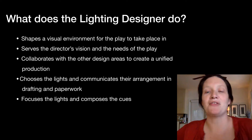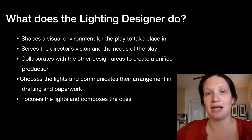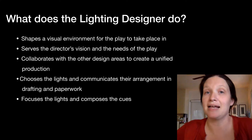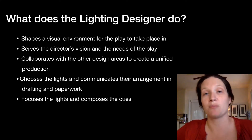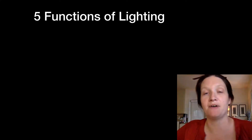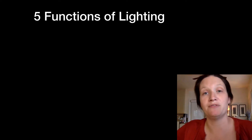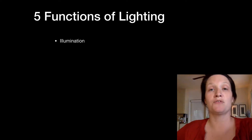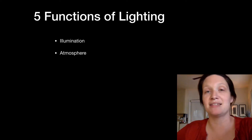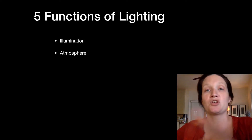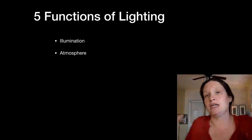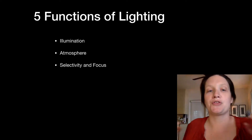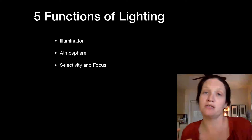Now let's talk about the five functions of light in a theatrical or performance setting. I'm going to talk about them briefly and then go into more detail on each one. The first is illumination — we want to be able to see things. The second is atmosphere, meaning what's the feeling of the space. The third is selectivity and focus.